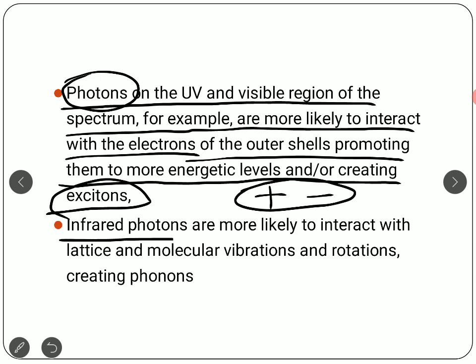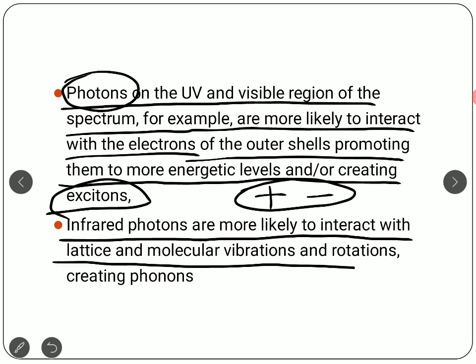On the other hand, infrared photons will actually interact with the lattice and molecular vibration and rotation, creating phonons. Phonons are nothing but a quantized state of lattice vibration — you should refer to solid state physics to be clear on the mathematical part. Infrared photons have lesser energy compared to UV or visible photons, so they cannot excite electrons much, but they introduce vibration into the lattice system, resulting in phonons.